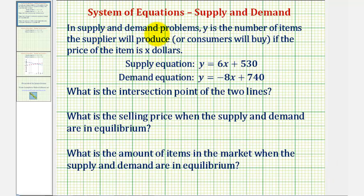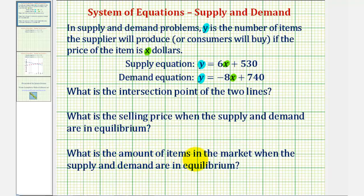In supply and demand problems, y is the number of items the supplier will produce or the consumers will buy if the price of the item is x dollars. Our supply equation is y equals 6x plus 530, and our demand equation is y equals negative 8x plus 740. We first want to find the intersection point of the two lines, then determine the selling price when supply and demand are in equilibrium, and finally find the amount of items in the market when supply and demand are in equilibrium.